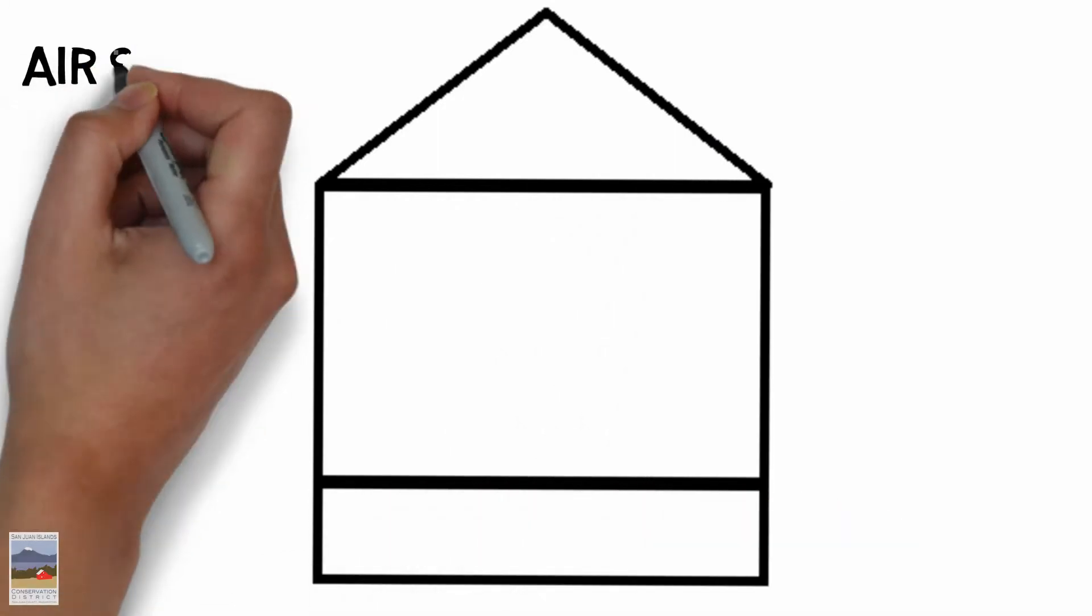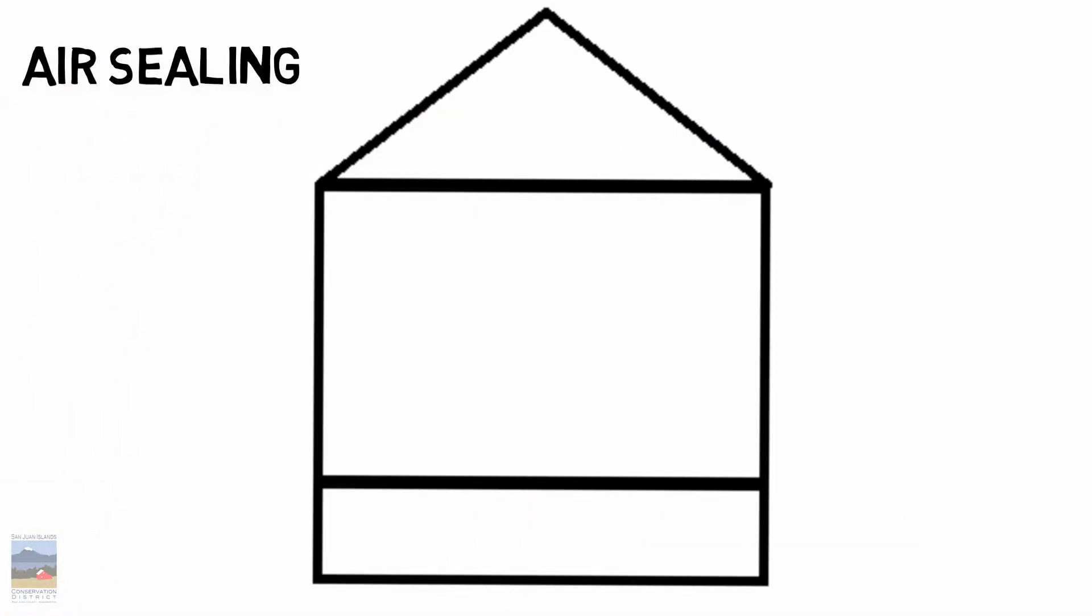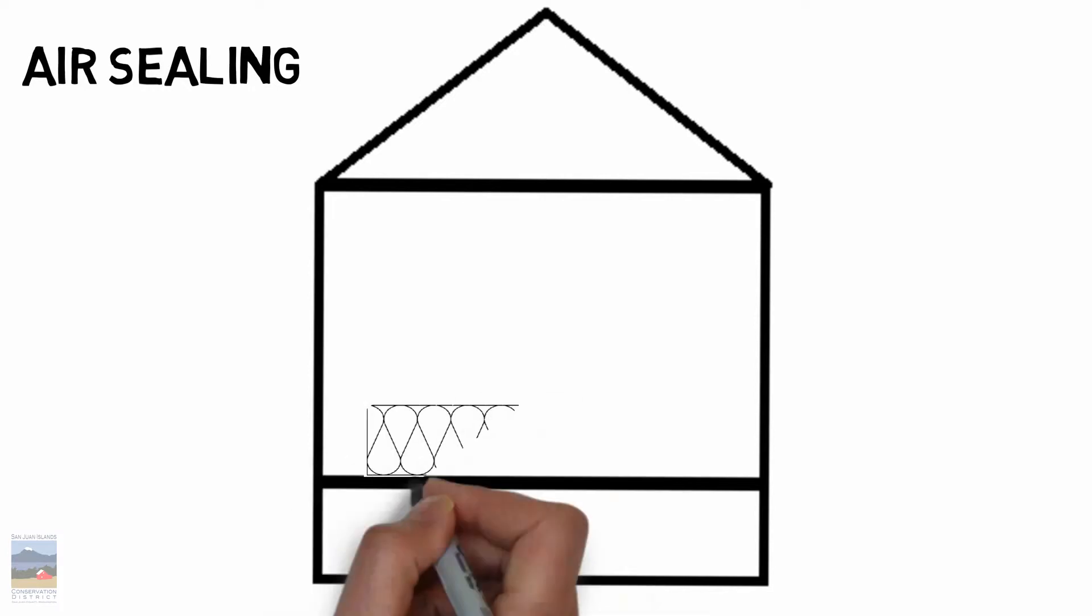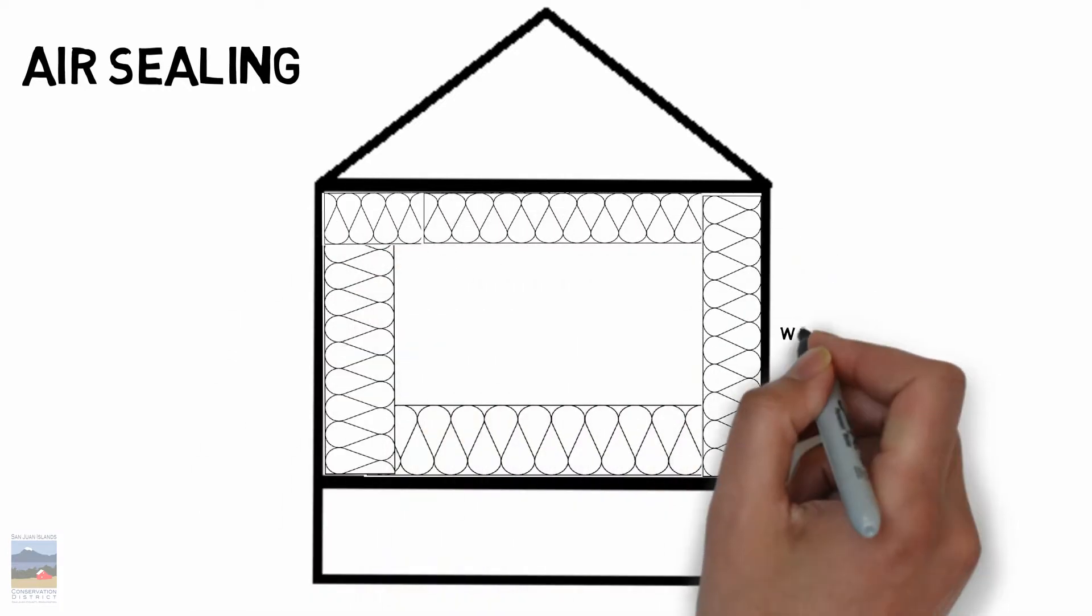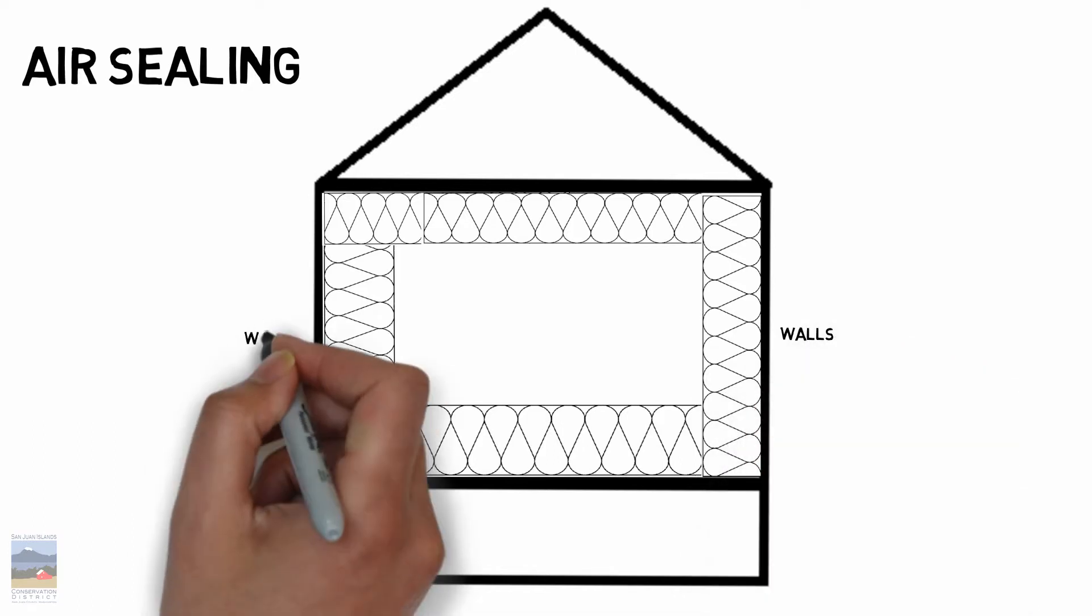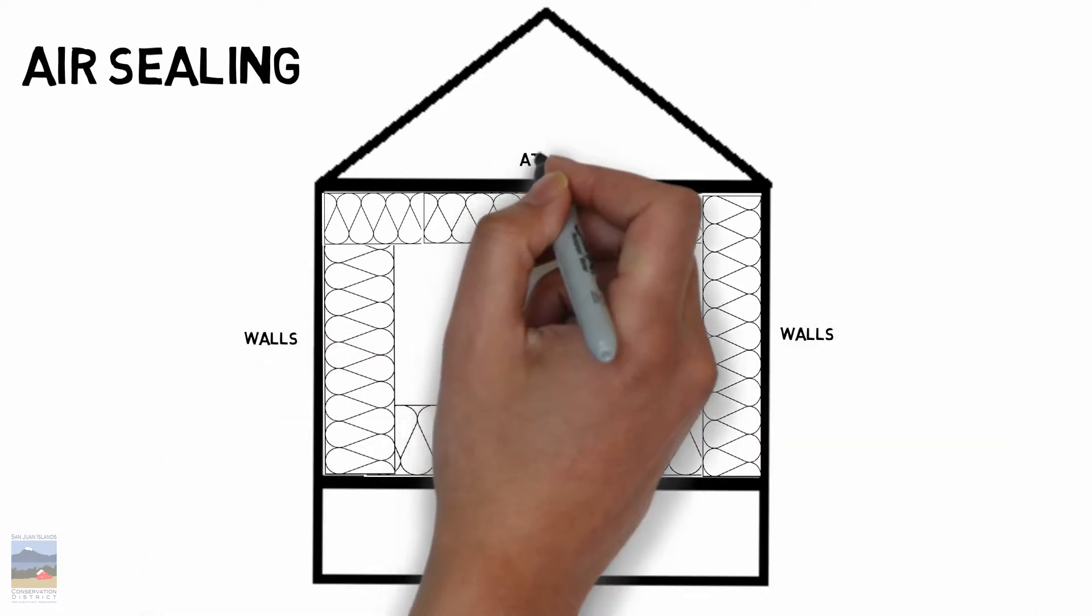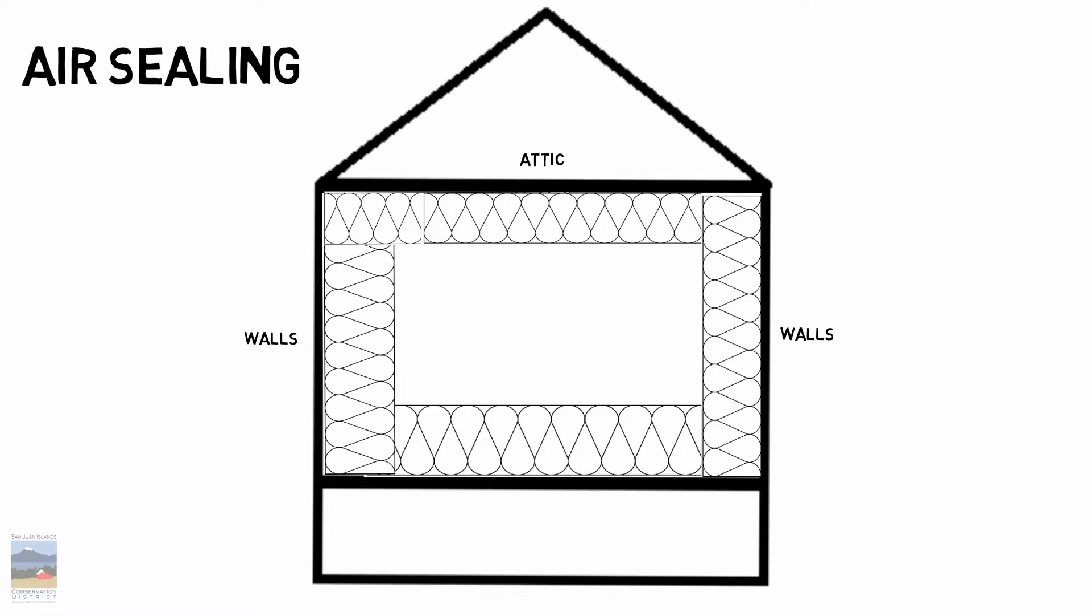So insulation. So we have insulation and then we have air sealing and we're going to get to that in a second, but first we're going to define where the insulation is in this house, right? Well, we're going to make the assumption that it's in the walls. So we have insulation. We're going to put some up in the attic. So we have a cold attic. It's not a conditioned attic. It's a cold attic. And we'll put some in the floor.